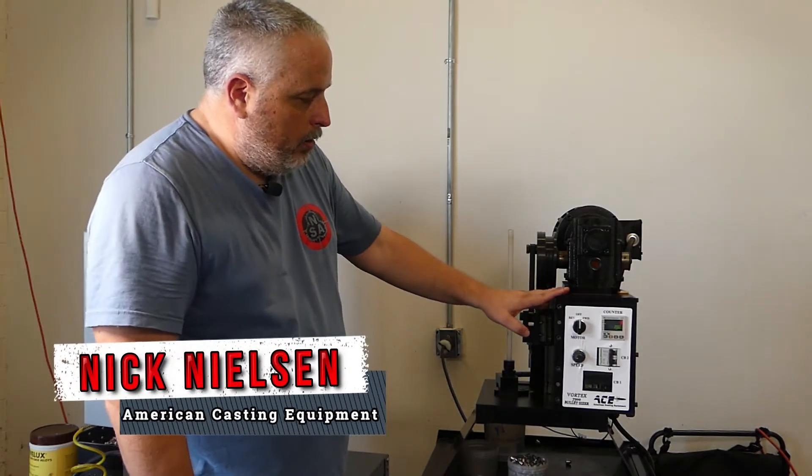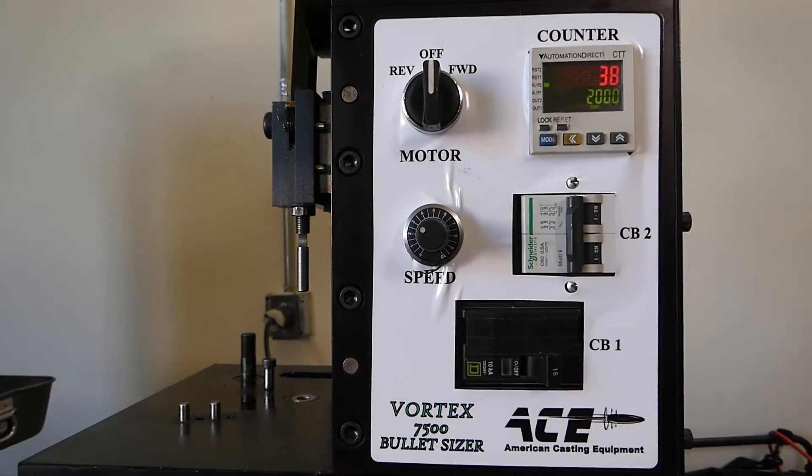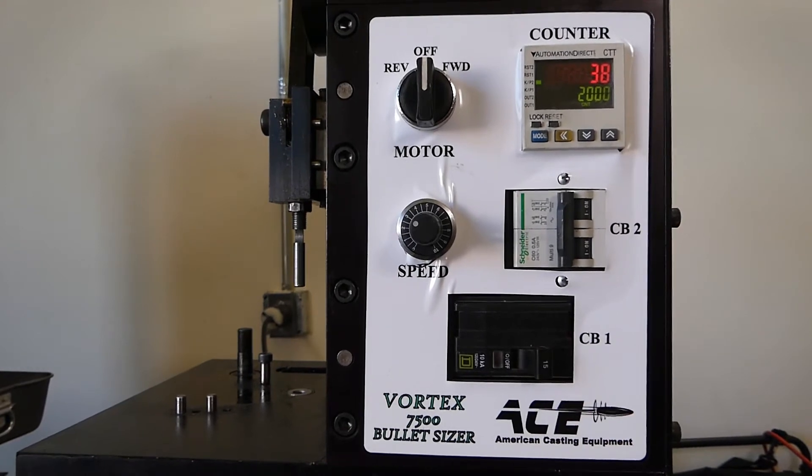Today we're looking at American Casting Equipment's Vortex Automatic Sizer. You can run this by hand or you can hook up a collator to it.